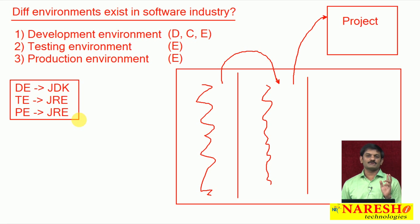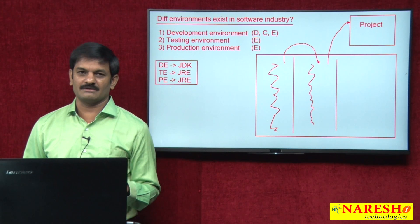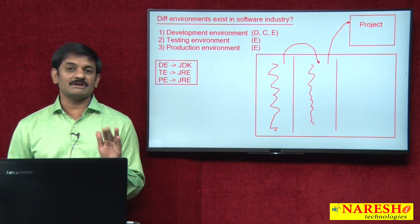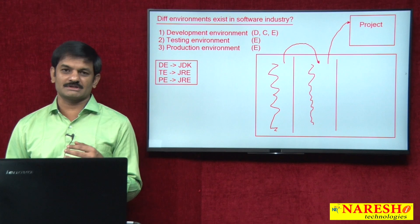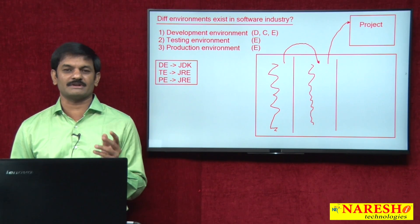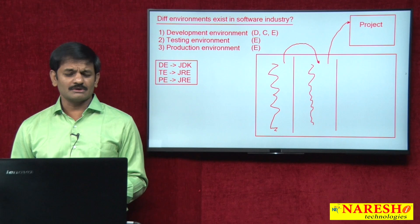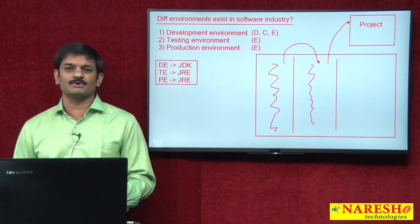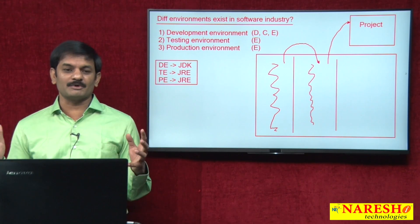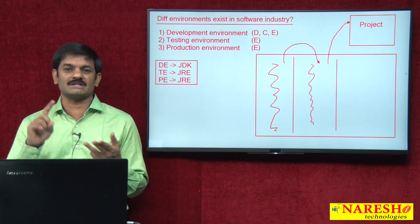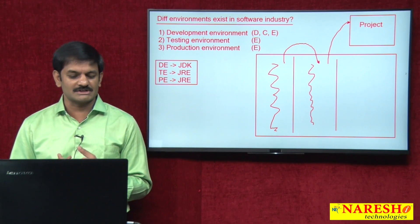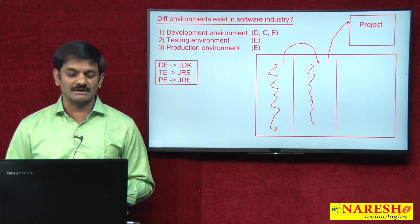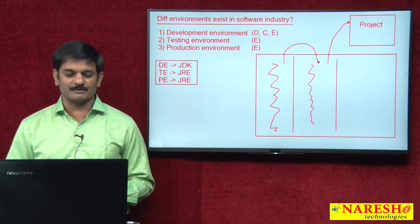In the previous session we discussed two types of software: JDK and JRE. JDK is meant for developing projects; JRE is meant for running projects. We also discussed the differences between JDK, JRE, JVM, and JIT. Now, in real software industry computers: in developer computers install JDK; in tester computers and client computers in the production environment, install JRE.